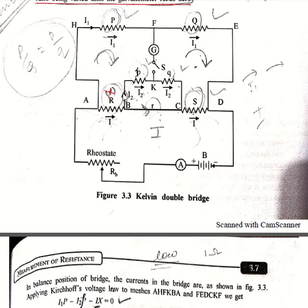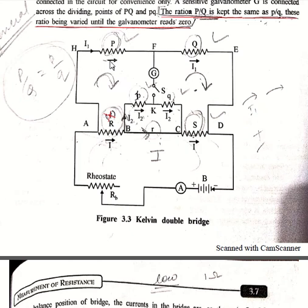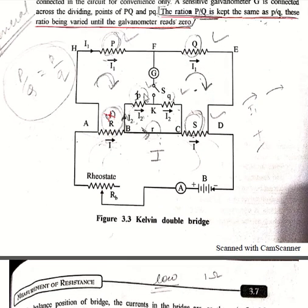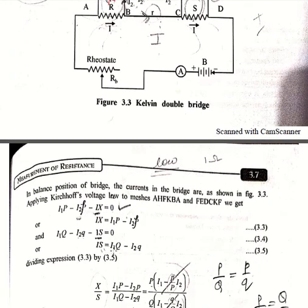Here I is divided into two parts: I₁ in one branch and I₂ in the small part of the circuit. By applying Kirchhoff's voltage law in the circuit we get: I₁P minus I₂·small p minus I·X equals zero, so I·X equals I₁P minus I₂·small p. Similarly applying Kirchhoff's voltage law in the arm F-E-D-C-K, we get: I₁Q minus I·S minus I₂·small q equals zero, so I·S equals I₁Q minus I₂·small q.